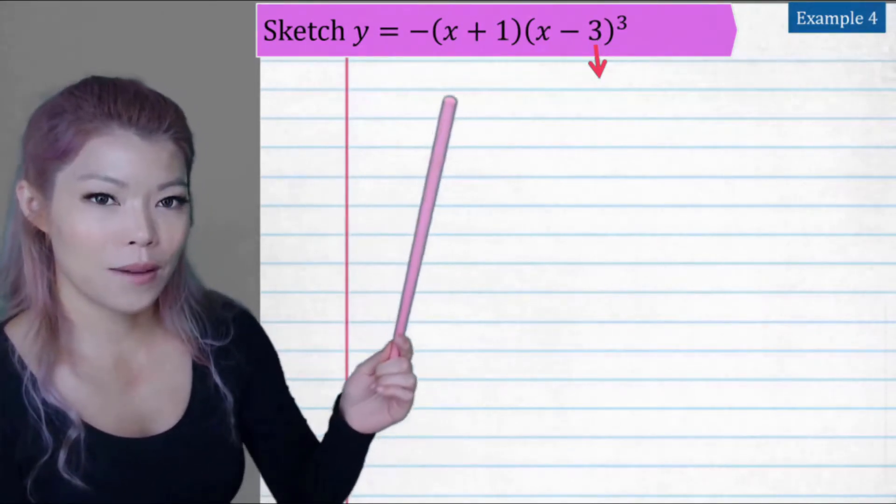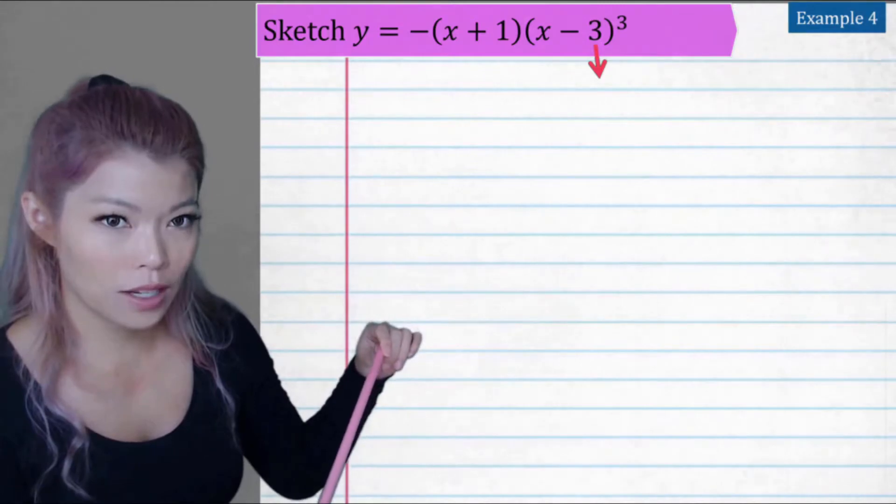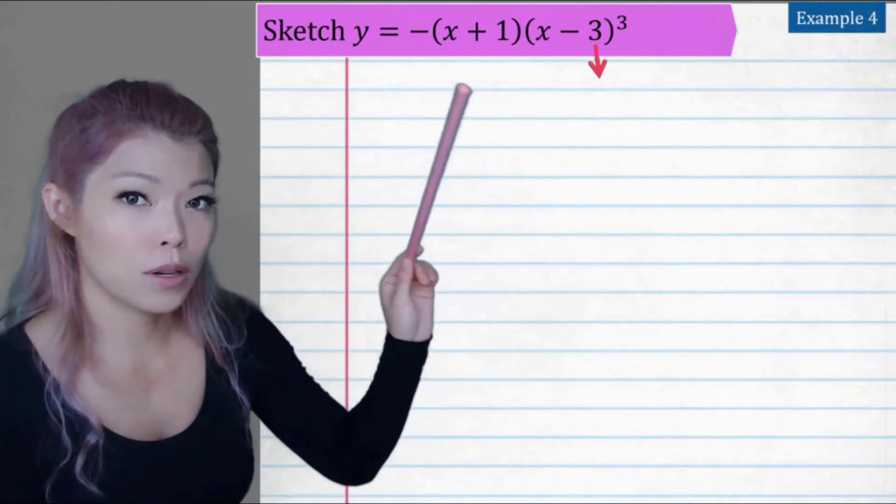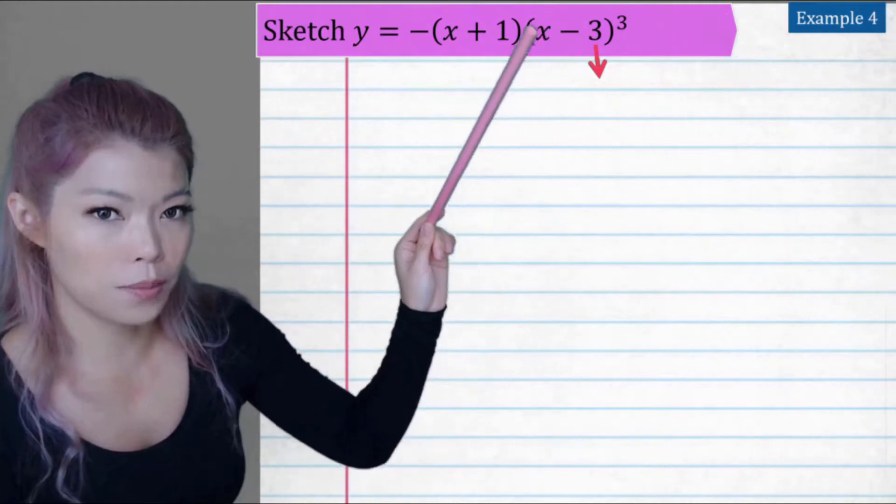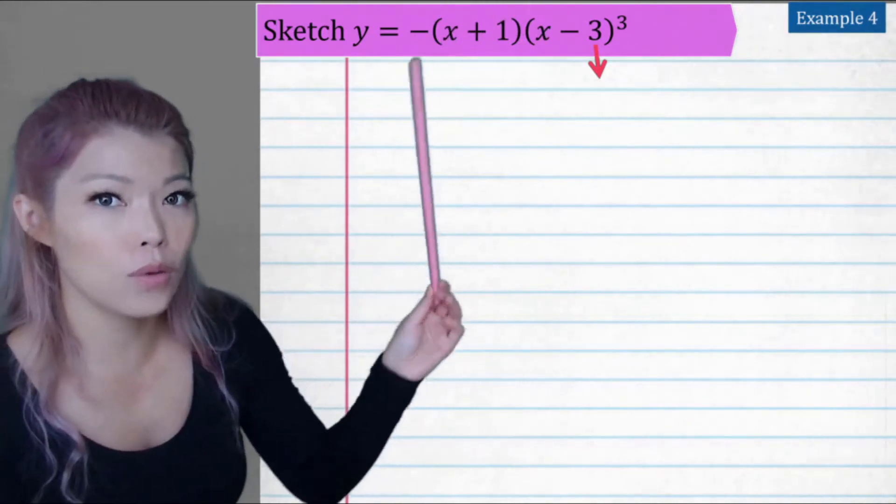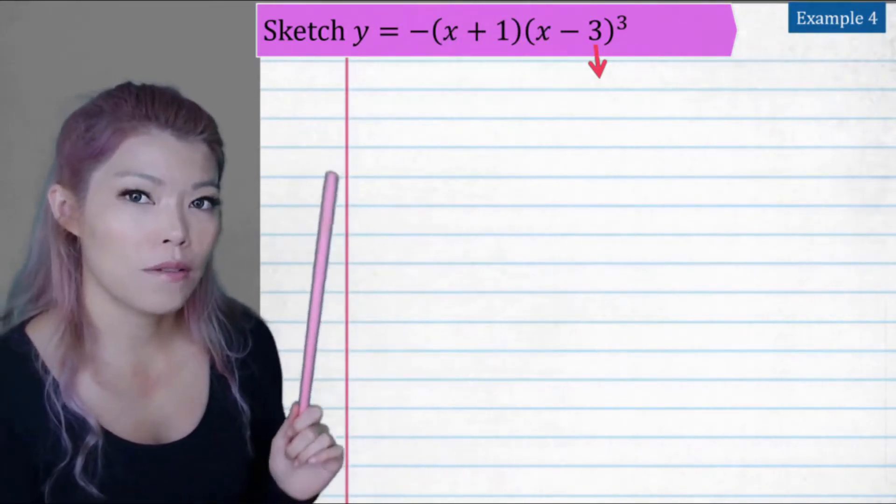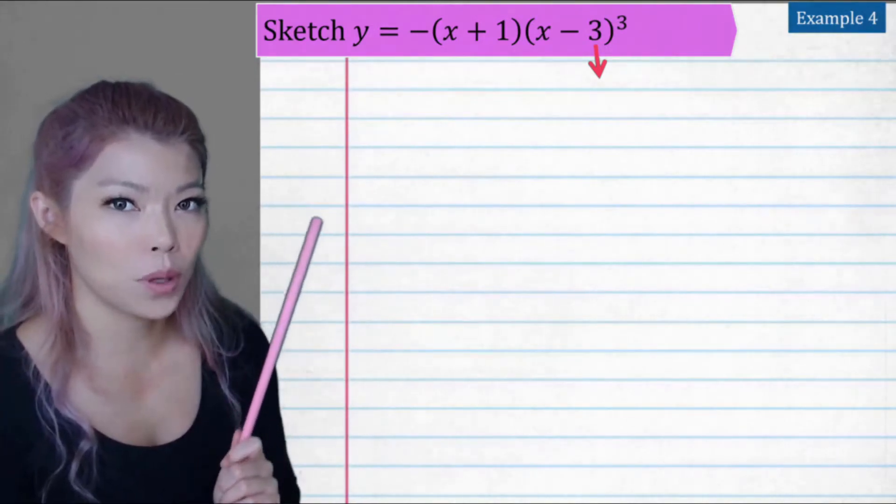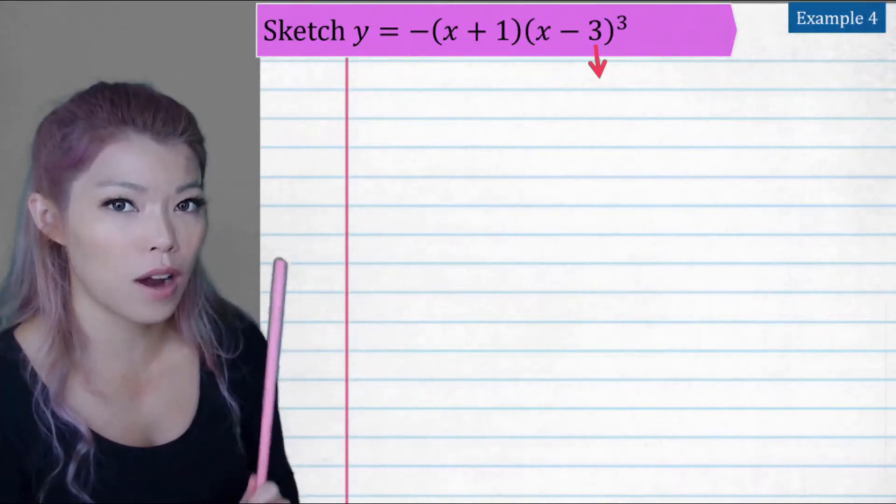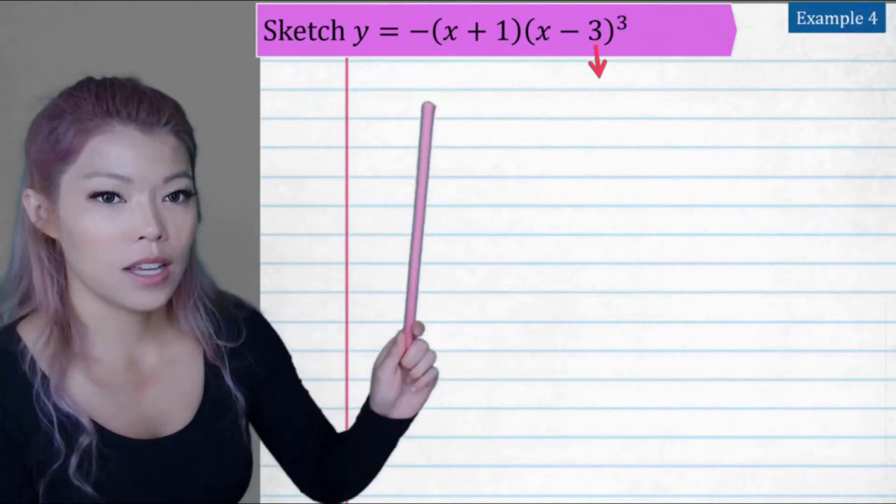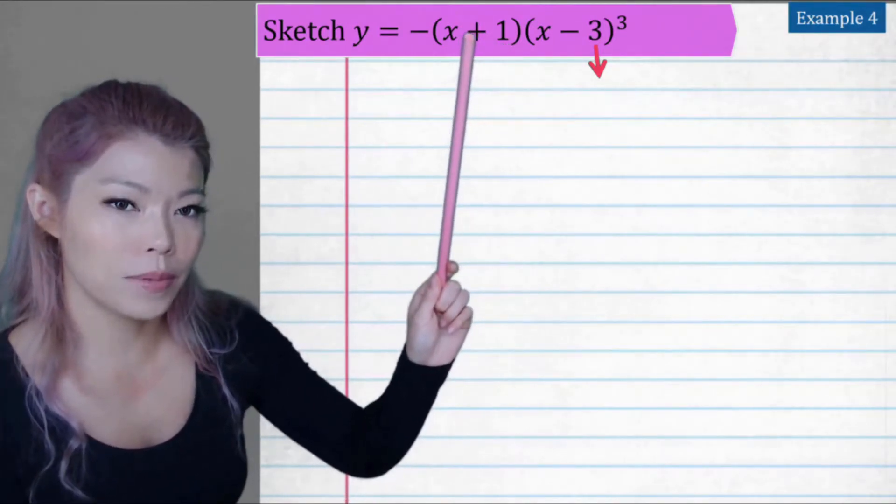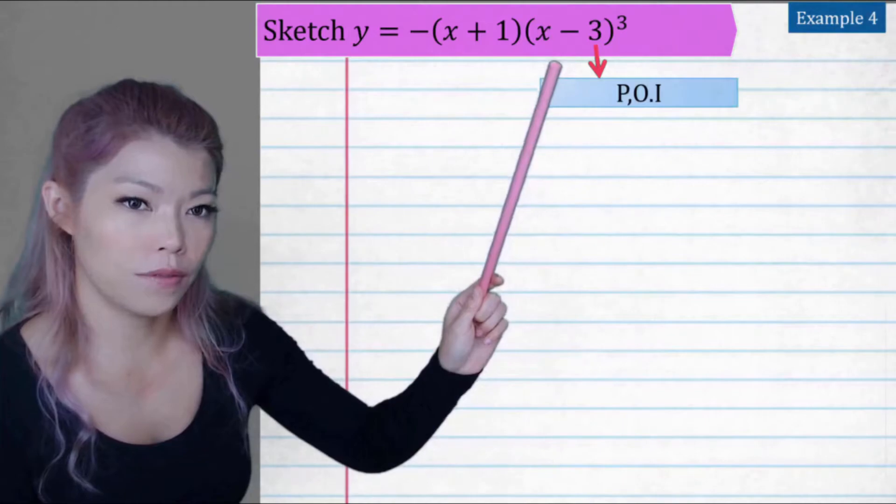Let's do another example. This time it's negative, so we know that it's going to be like so. But also check x times x times x times x is positive, times negative is negative. So you always look for x to the power of 4 or the highest and see if it's positive or negative. That will tell you if the graph is positive or negative. So here we have a negative graph and we have an intercept and we have a point of inflection.